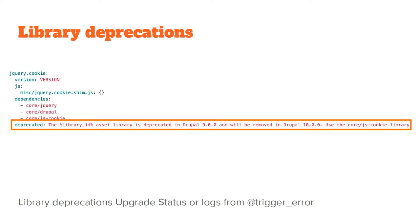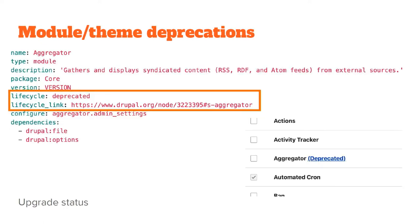Modules and themes can also be deprecated now — such as Aggregator, HAL, and RDF. There's a new lifecycle key for 'deprecated', also used for experimental modules, which helps explain their lifecycle in the experimental process. There's also a lifecycle link so you can go find and read more about why something is in beta, deprecated, alpha, etc. If you go to the modules list, it actually has a link to that lifecycle status and can bring you to that node.